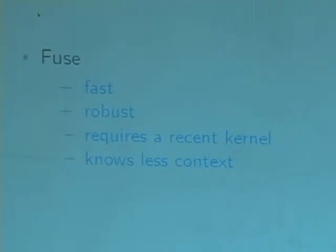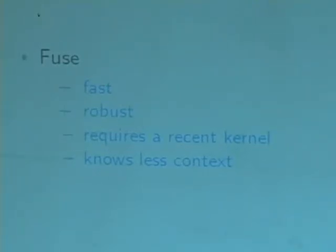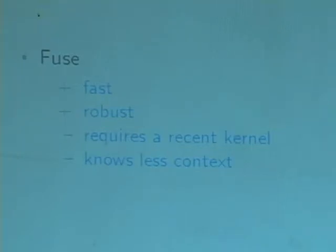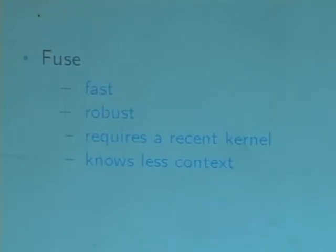FUSE is really fast because the Lua engine is started only once when the FUSE engine is started. It's really robust — you can't tamper it from the process side like you can with LD preload. It requires FUSE in the kernel, and kernel 2.4 is still important for some targets. It knows less of the context of the binary, because you can't look into the memory of the application, and you don't have the level of glibc functions — VFS is a much lower level.